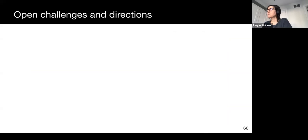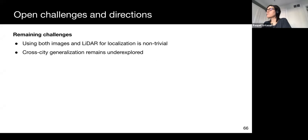Some remaining challenges in global localization include using both images and LIDAR. In the example that we described, the network uses images and LIDAR, and we found that fusing information from both is actually really non-trivial.